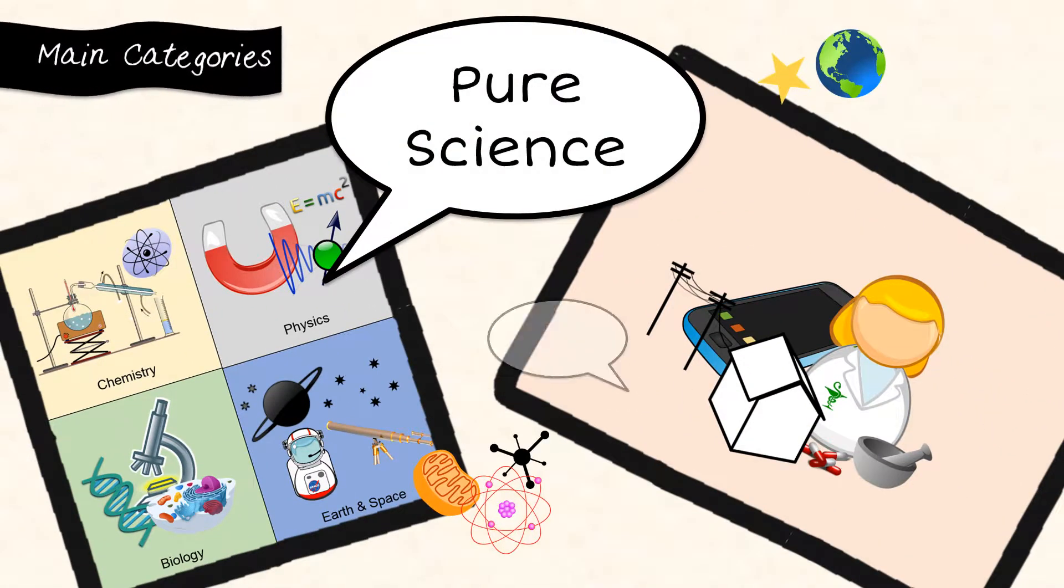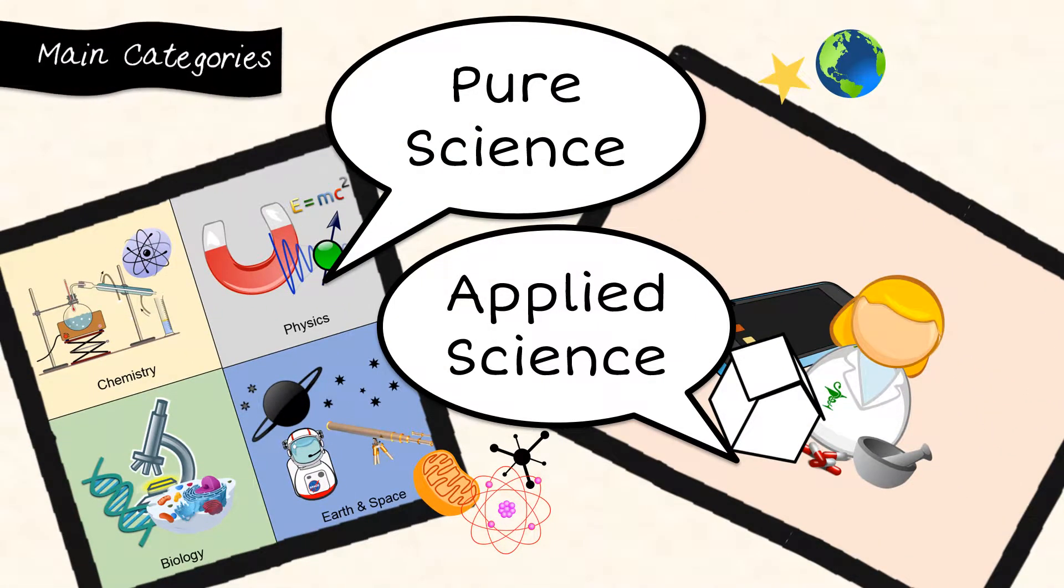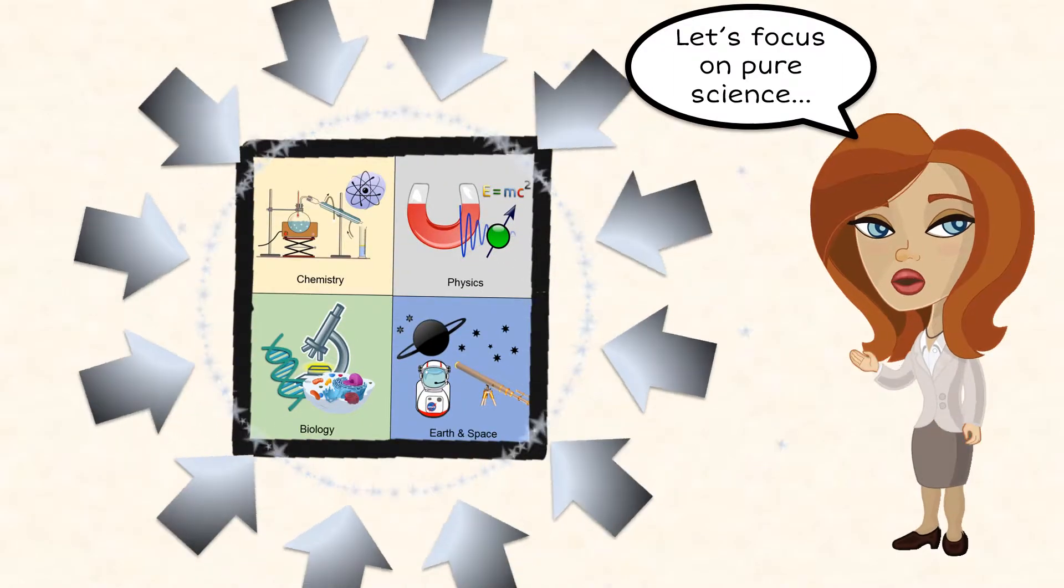There are two main categories of science: pure science and applied science. Pure science is science for gaining knowledge, and applied science is applying that knowledge to solve a problem. Today we will focus on pure science and think about the nature of science.